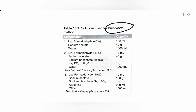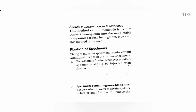The Wentworth method composition: Solution 1 contains liquid formaldehyde, sodium acetate, and water. Solution 2 contains liquid formaldehyde, sodium acetate, sodium phosphate tribasic, and water. Solution 3 contains liquid formaldehyde, sodium acetate, sodium phosphate, glycerin, and water. There is also Scherl's carbon monoxide technique, in which carbon monoxide is used to convert hemoglobin into the more stable compound carboxyhemoglobin. However, this method is not used in practice. Those are the three types of methods.